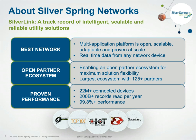Silver Spring Networks is a network platform company. The majority of our business has been in electric metering and electric AMI, and we are moving into parallel use cases in water, gas, smart cities, streetlights, and other IoT applications. We have an open partner ecosystem as a core tenant of our platform — open on both the device end and the software end — with 125-plus partners across water, gas, electric, smart cities, distribution automation devices, energy efficiency, distributed generation, demand response, and grid operations.